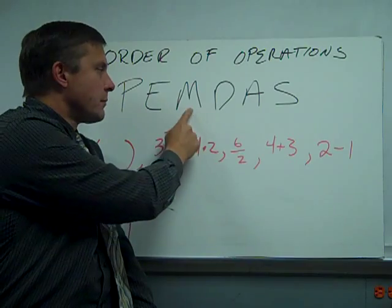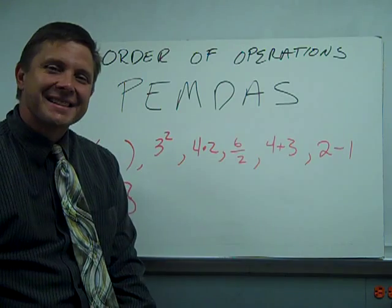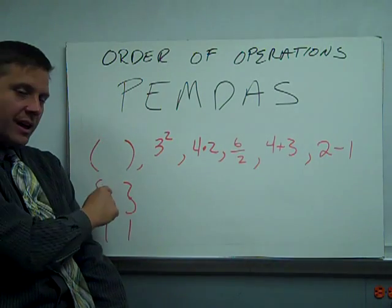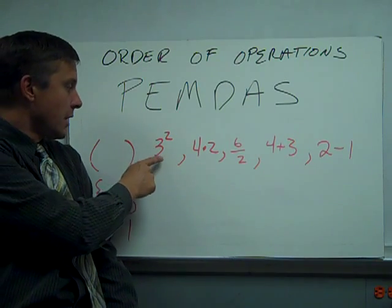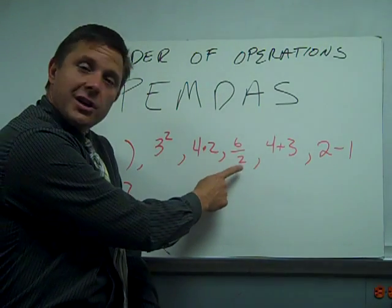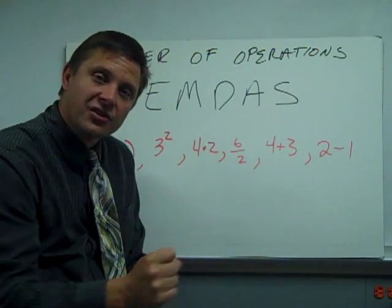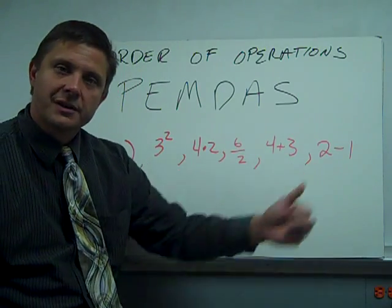And when I think of order of operations, we think of PEMDAS. Parentheses, exponents, multiplication, division, addition, subtraction. PEMDAS. And again, parentheses - I don't care what form of brackets, absolute values are a type of parenthesis. We have exponents, 3 squared, 4 times 2 is multiplication, 6 divided by 2. And again, fractions are division, divisions are fractions, addition and subtraction.